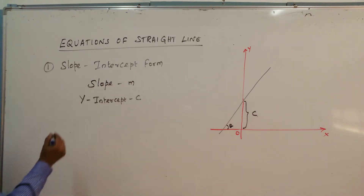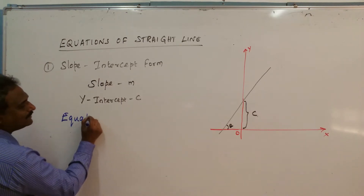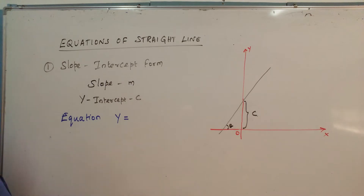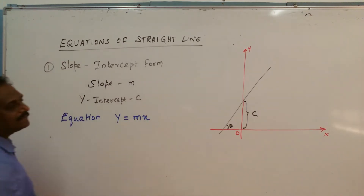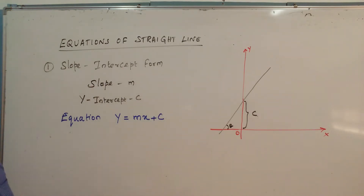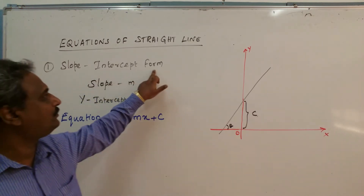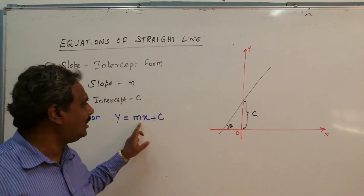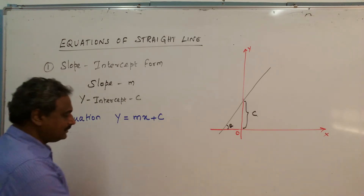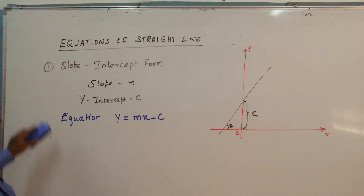Here we are going to define the equation as y equal mx plus c. We are going to define the equation of a straight line in slope-intercept form as y equal mx plus c. Understand the concept.